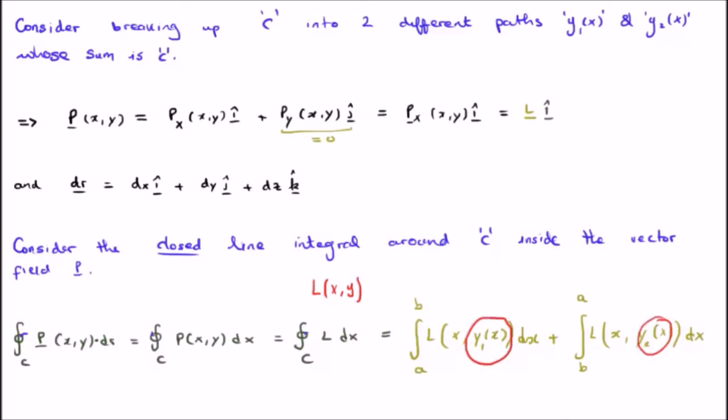So, what we do is we actually rewrite this closed line integral as the sum of two integrals, whose sum, of course, is a closed line. And, we have x, we'll say L a function of x and y1 of x, and L a function of x and y2 of x. I hope that's pretty straightforward.